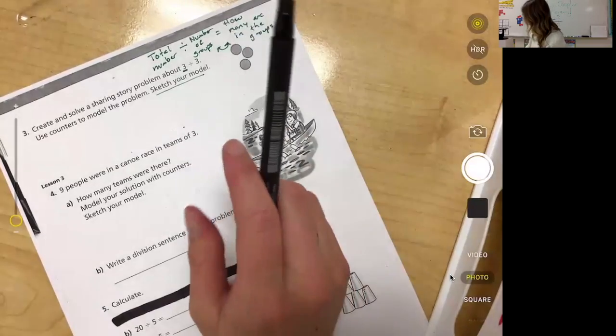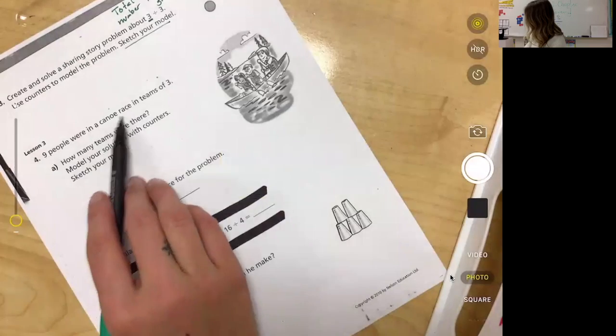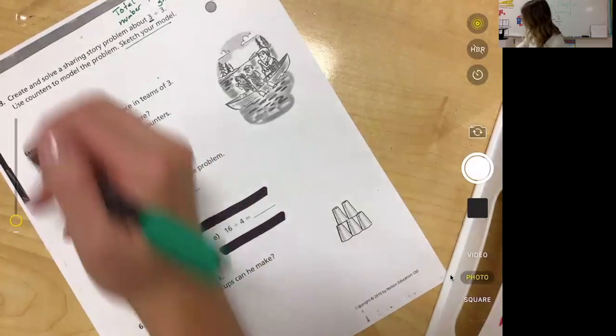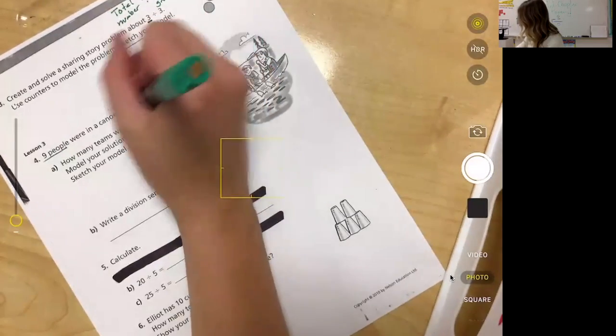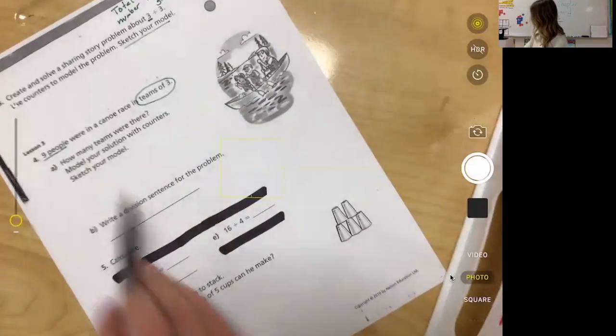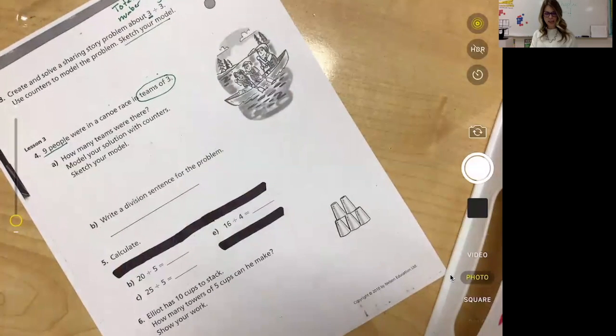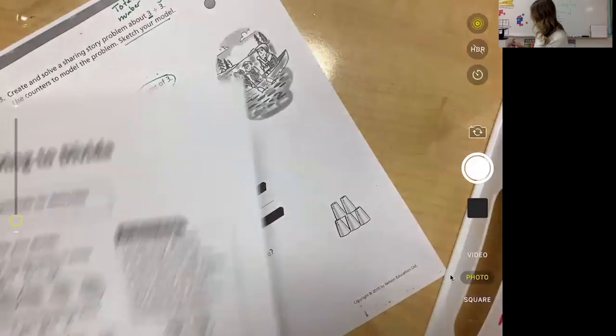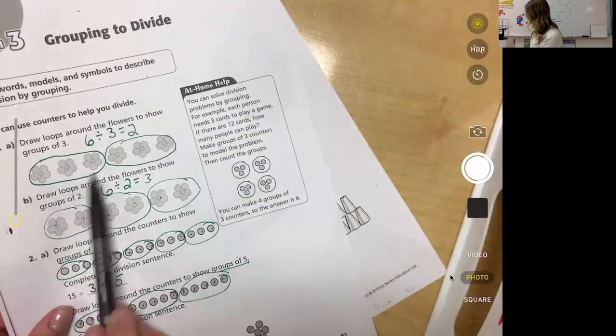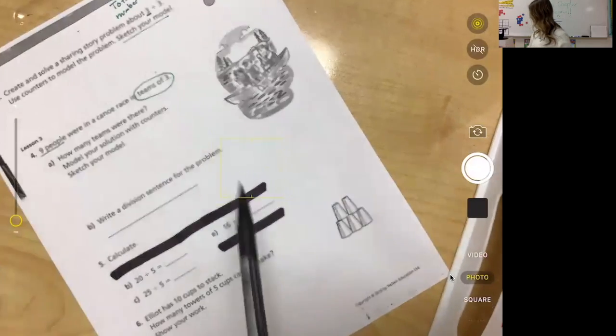Lesson three, number four says nine people were in a canoe race in teams of three. So nine is your big altogether number, and we're saying how many in a group this time. We have three in a group, teams of three. How many teams were there? So remember this is just like these questions here when we have a number that's the total and then we're breaking them off into groups of something. This one asked for groups of three, so we circle the groups of three.